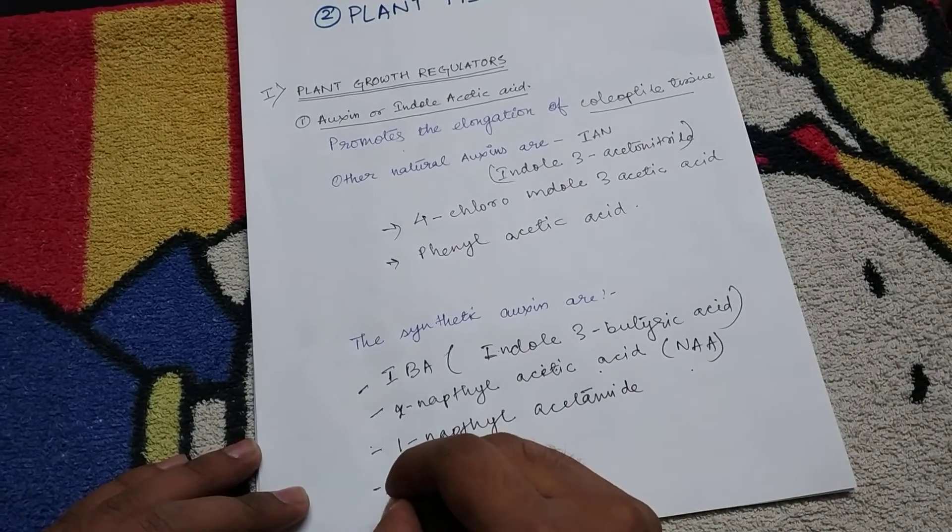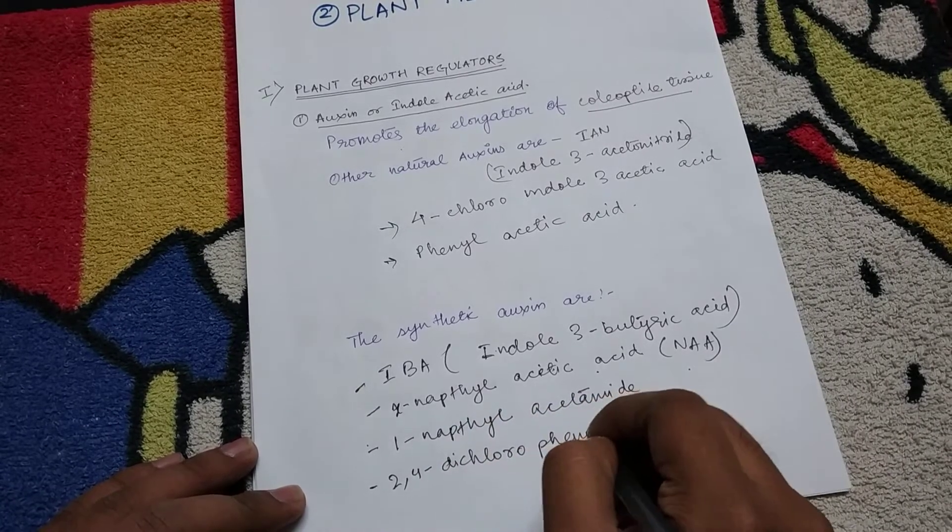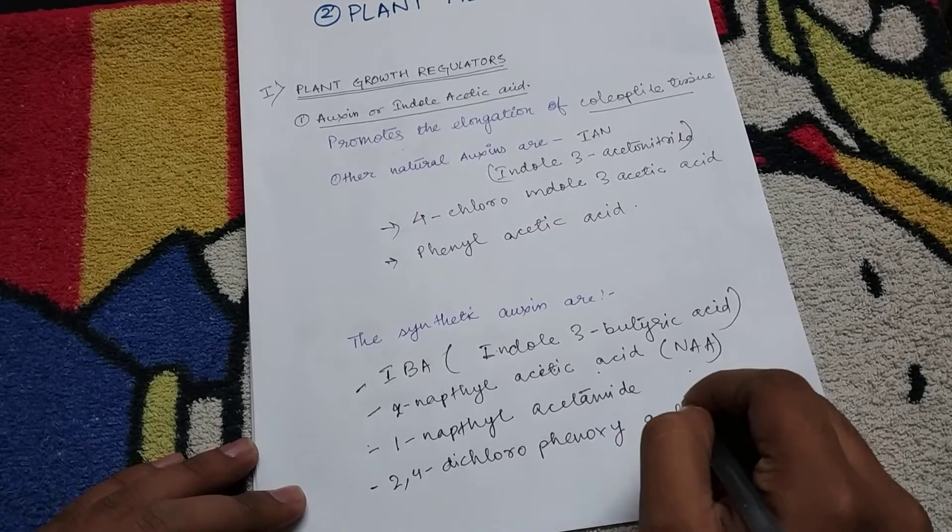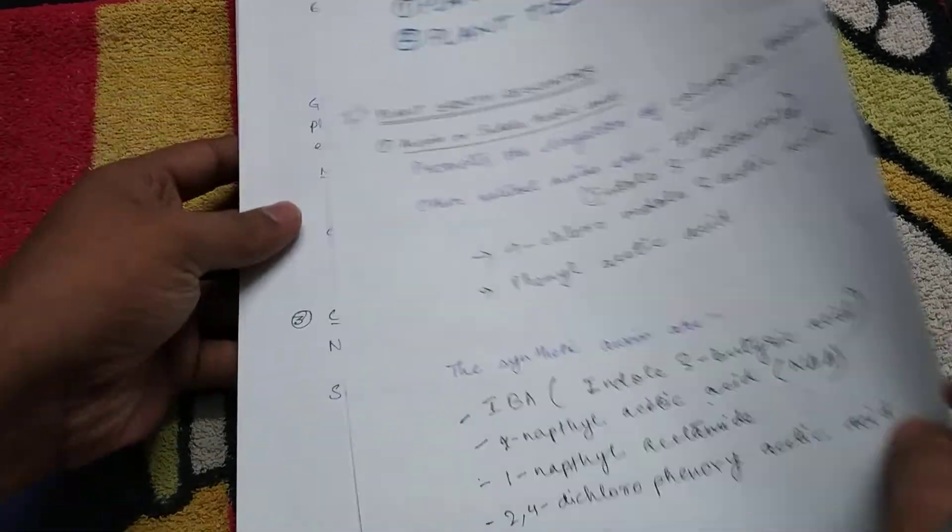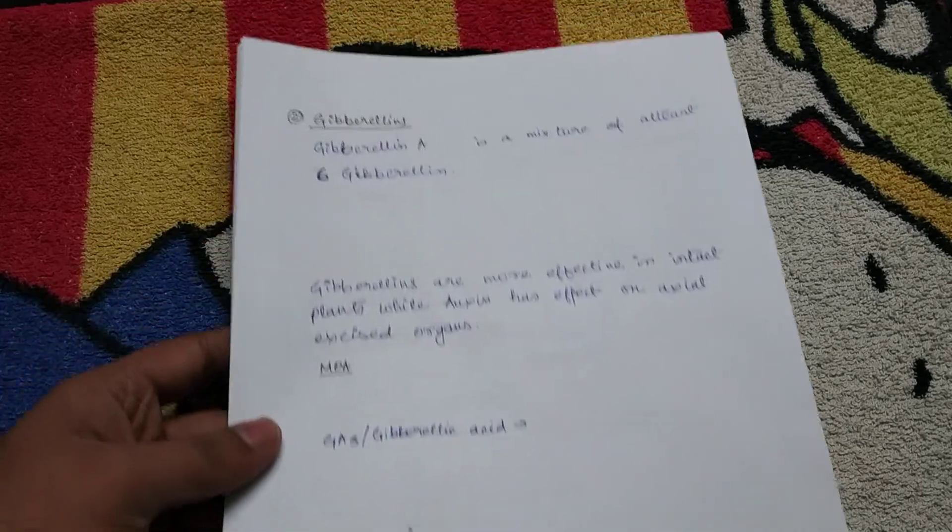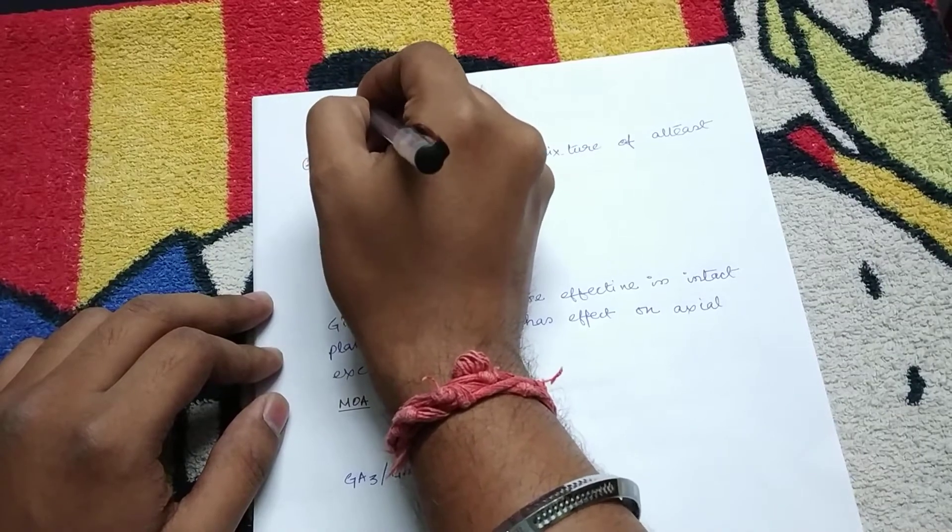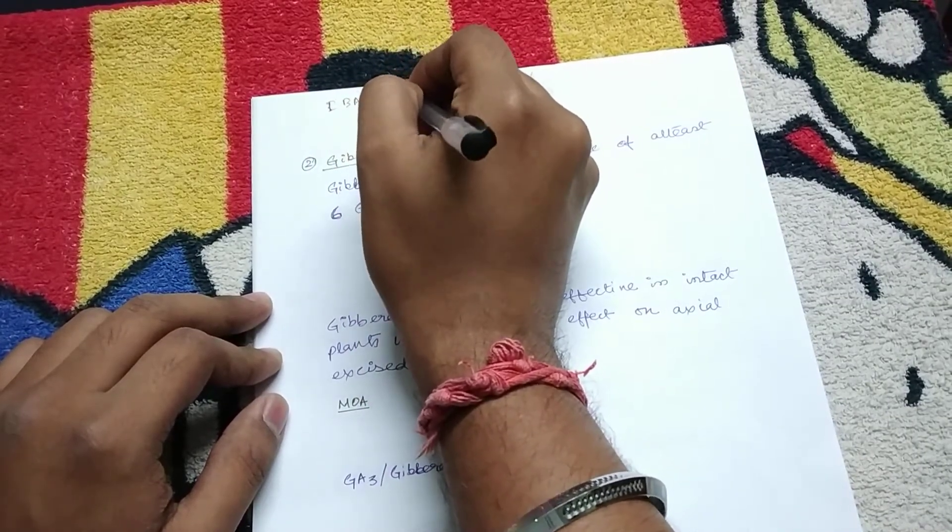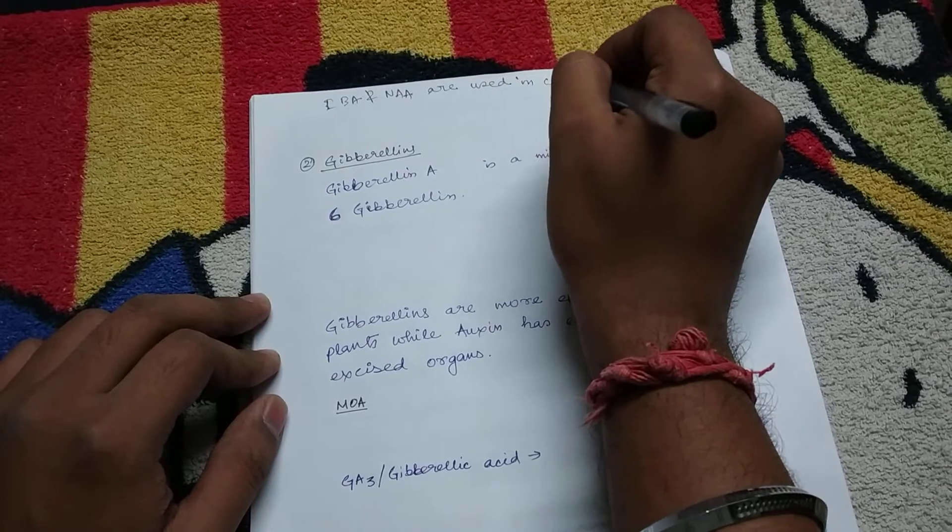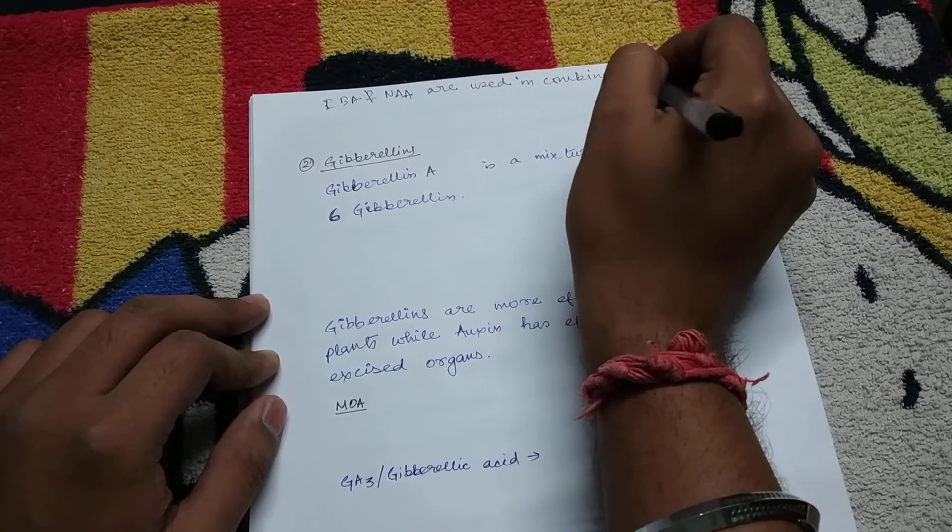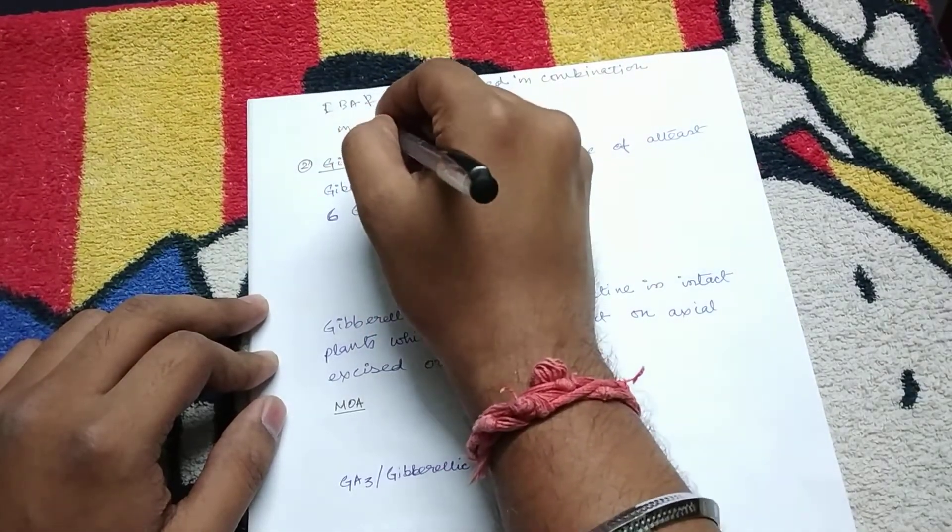Then 2,4-dichloro-phenoxy acetic acid. Now IBA and NAAA are used in combination in rooting of the cutting parts.